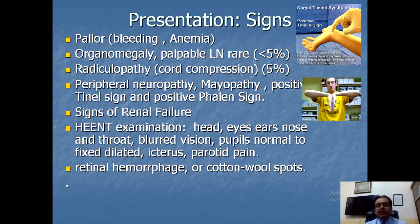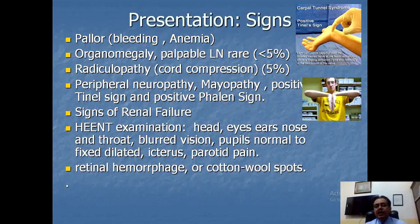Radiculopathy, with or without cord compression, may be present in about 5% of cases. Single or multiple nerves are involved, and the patient may have pain, numbness, and weakness in the area supplied by those nerves. Peripheral neuropathy with motor weakness and sensory signs may also be present. Myopathy — both proximal and distal — may develop due to the generalized involvement of nerves, cord, bones, and muscles.